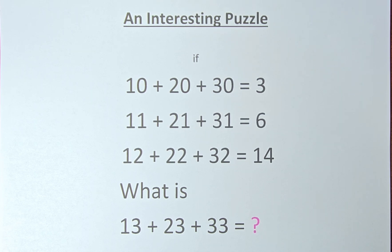The numbers in the puzzle are as follows: If 10 plus 20 plus 30 equals 3, 11 plus 21 plus 31 equals 6, 12 plus 22 plus 32 equals 14. What then is 13 plus 23 plus 33 equals to?